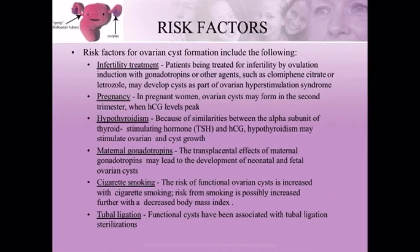Next come the risk factors for ovarian cysts. First is infertility treatment. If a woman is being treated for infertility by ovulation induction with gonadotropins — the main drug being clomiphene citrate — taking that drug for a long time can lead to ovarian cysts. Second is pregnancy. In pregnant women, ovarian cysts may form in the second trimester when HCG — human chorionic gonadotropin — levels peak.